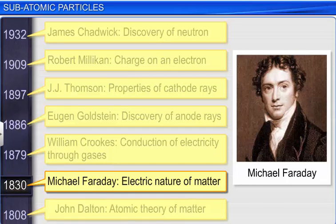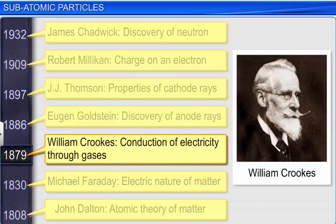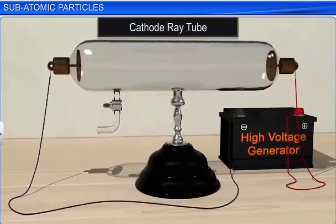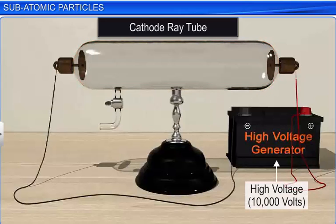The structure of an atom was demystified only when William Crookes conducted experiments to study electrical discharge through gases in 1879. The apparatus used for his experiments consisted of a glass discharge tube — now called cathode ray tubes or Crookes tubes — and a high voltage source of 10,000 volts.